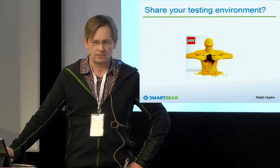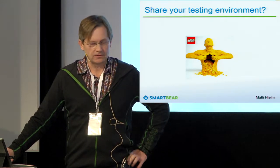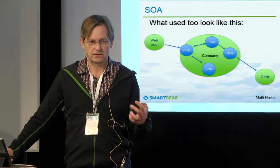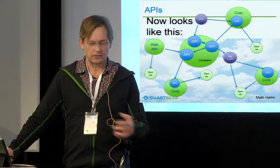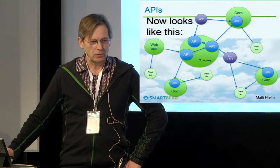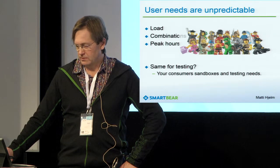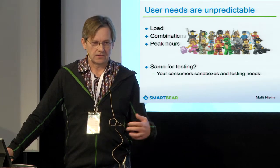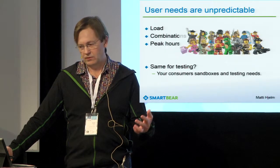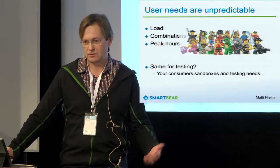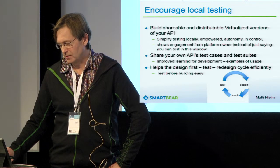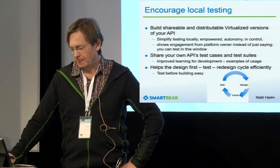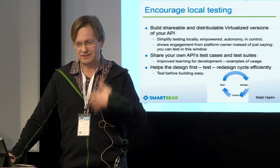So why don't you just share your testing environment — set up some servers dedicated to testing? The problem is that in this new economy, user needs are unpredictable. In the API world, there's no predictability for when and where API calls are coming from or how much. So testing is also unpredictable, and you may have to prepare for really big volumes of testing, which could be very expensive. Instead, I advise you to encourage local testing — build sharable and distributable virtualized versions of your API.